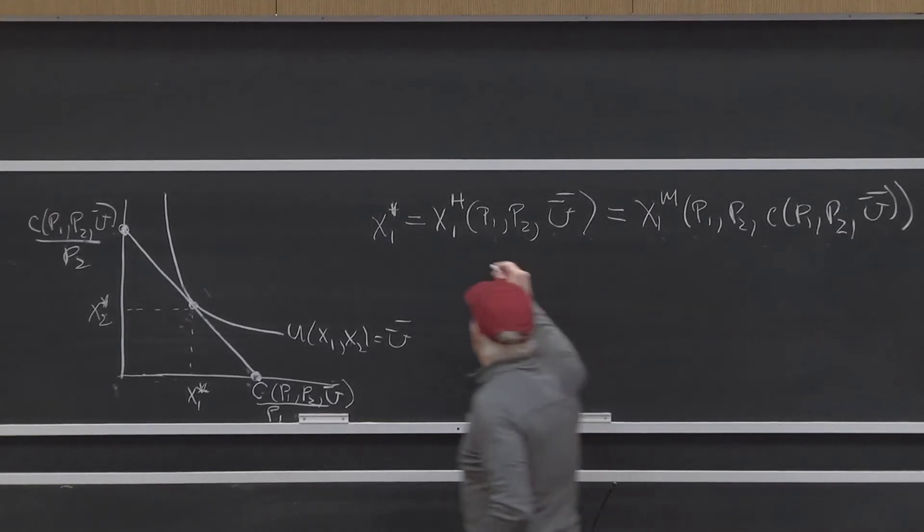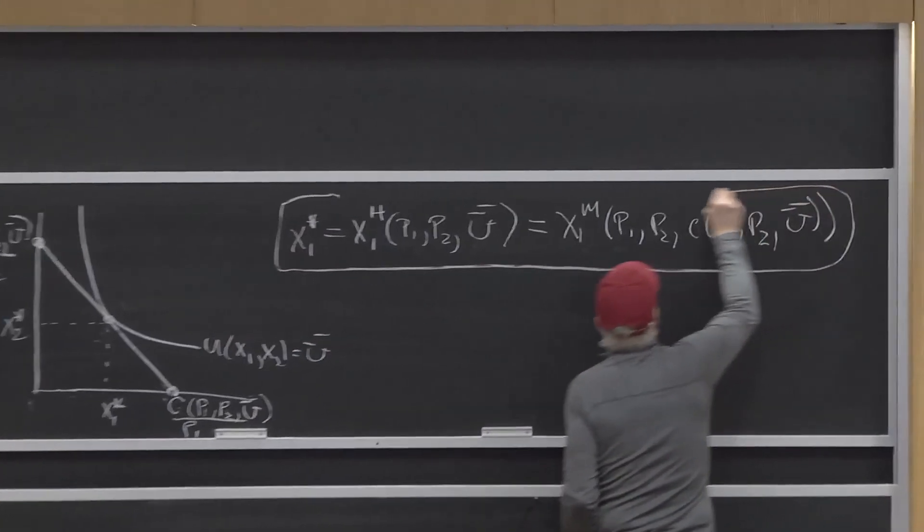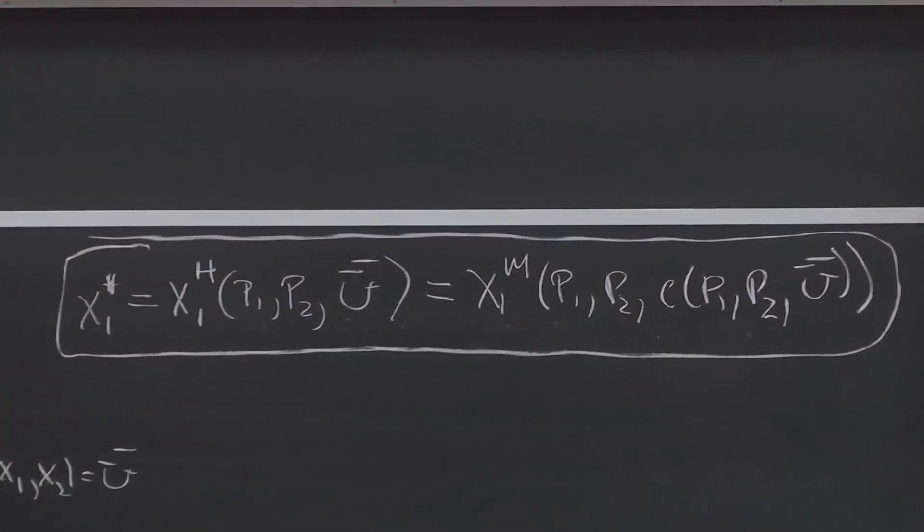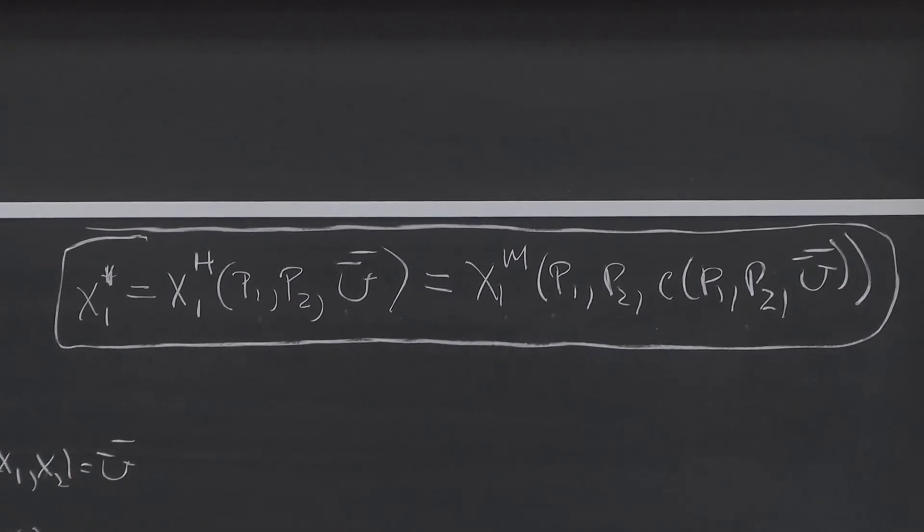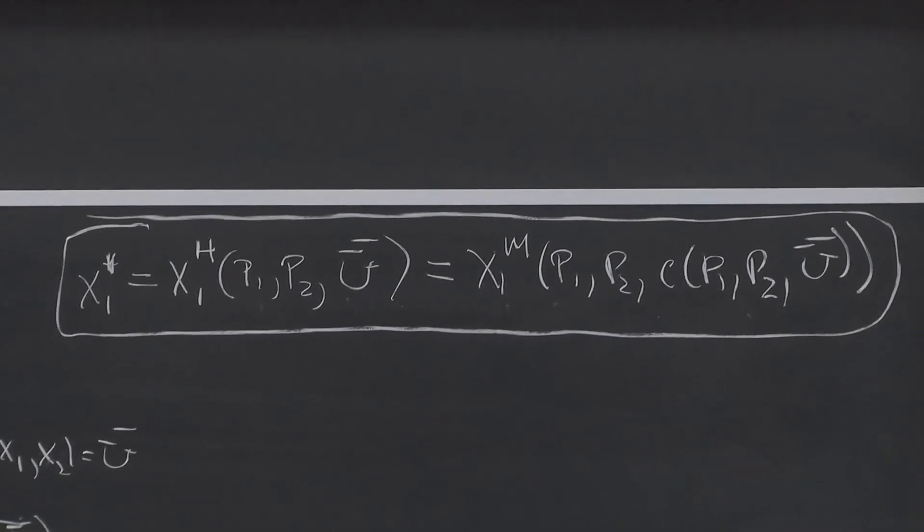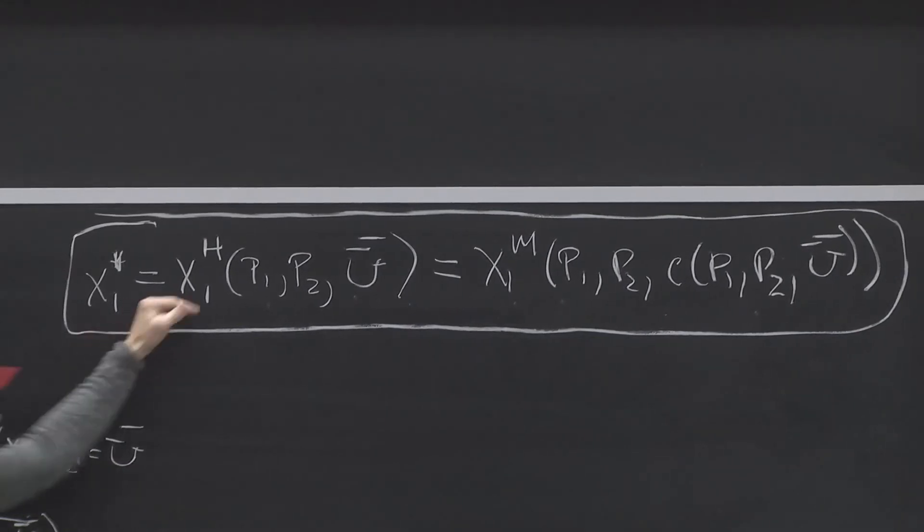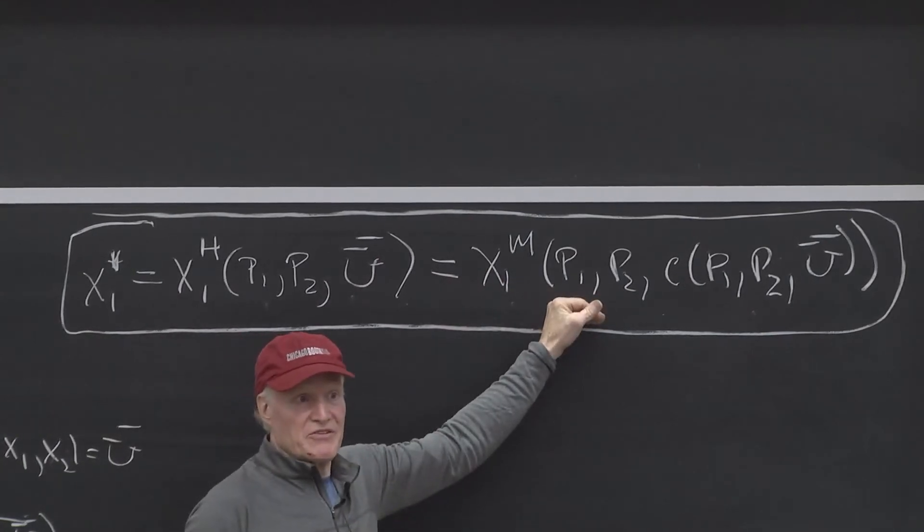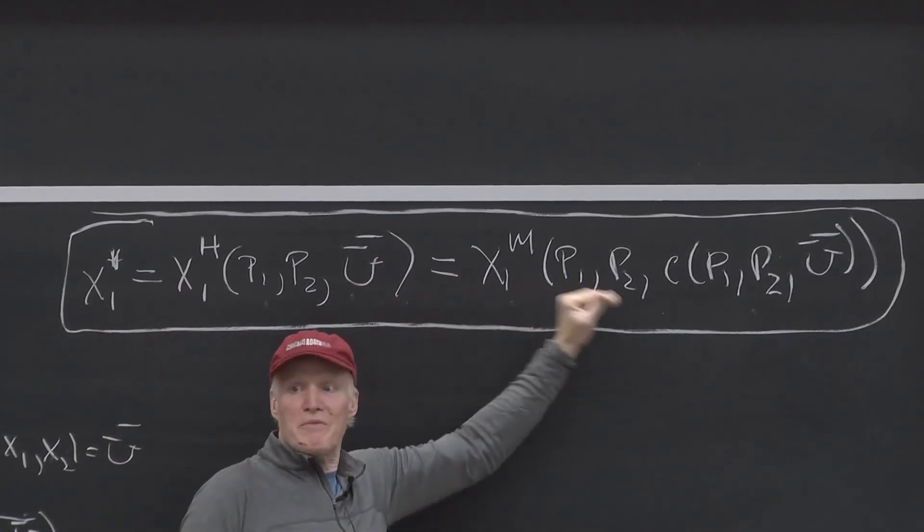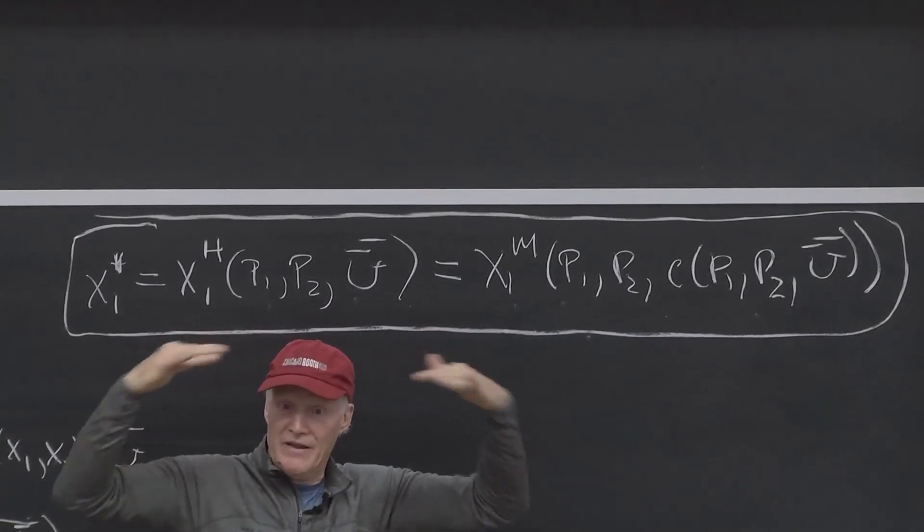Anyway, I think there's a word for this. I would call this kind of the Slutsky correspondence. This is kind of the Slutsky equation. Everybody heard of the Slutsky equation? I mentioned it last time. This is kind of one level above the Slutsky equation, right? Because the Slutsky equation is about derivatives. It's about how are the derivatives of the Hicksian system linked to the derivatives of the Marshallian system. This is a more primitive relationship that talks about the levels. These two functions are equated in the following way.